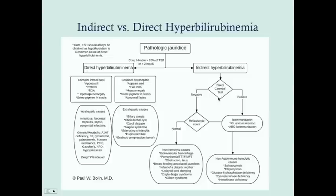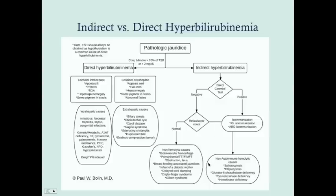The direct Coombs test and reticulocyte count will tell you two things: whether or not there is hemolysis going on, and if there is, whether that hemolysis is autoimmune — like RH isoimmunization or ABO incompatibility — or non-autoimmune, such as spherocytosis or elliptocytosis. Typically these non-autoimmune hemolytic diseases don't present in newborns, but they can, so they're included here for completeness.